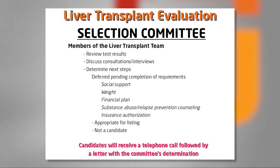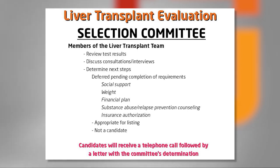Very few people are ready right away to be listed for transplant. There are things they may need to do — like establishing social support, making sure someone can help you get to and from the hospital before and after transplant. Some people have to lose or gain weight. Some need to develop a financial plan through the social worker. You may also need to complete substance abuse relapse prevention counseling, and we obtain insurance authorization to list you once you're ready.